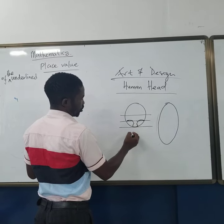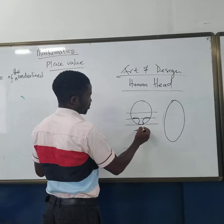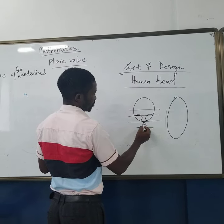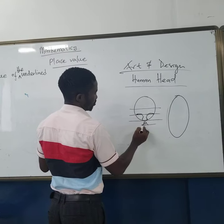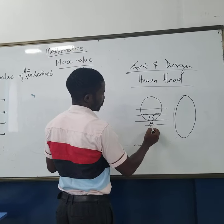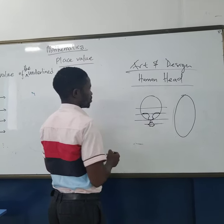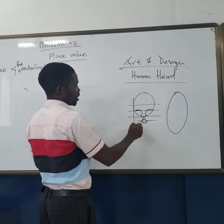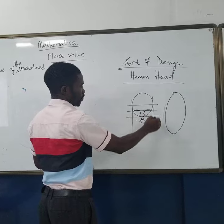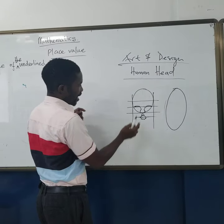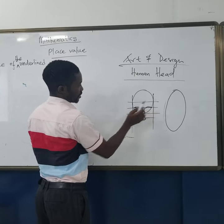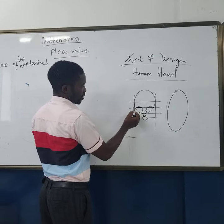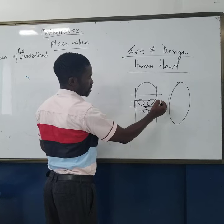Do another line for your mouth. From the eye line, on both sides, these are the two lines down to the nose line. You put a line there, coming down, and that would create your ears.